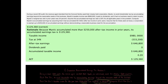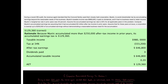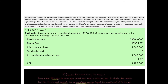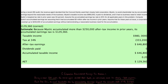Now let's look at a similar but different problem. During a recent IRS audit, the revenue agent decided the Concord family used their closely held corporation Mystic to avoid shareholder tax by accumulating earnings beyond the reasonable needs of the business. Mystic's taxable income was $980,000, it paid no dividends, and had no business need to retain income. Mystic's marginal tax rate in prior years was 34%. The accumulated earnings tax rate is 20%. Compute Mystic's accumulated earnings tax assuming it had accumulated $3 million after-tax income in prior years, with a $250,000 exemption.